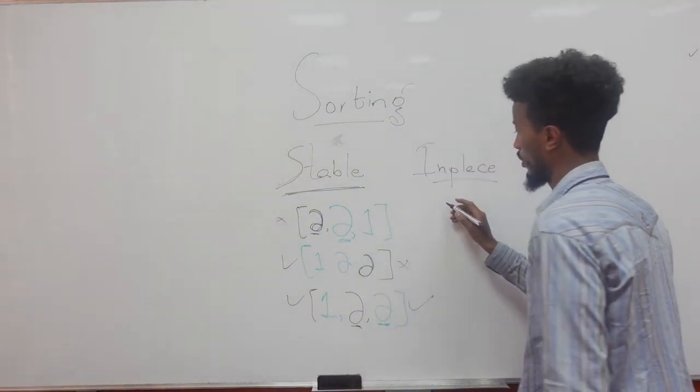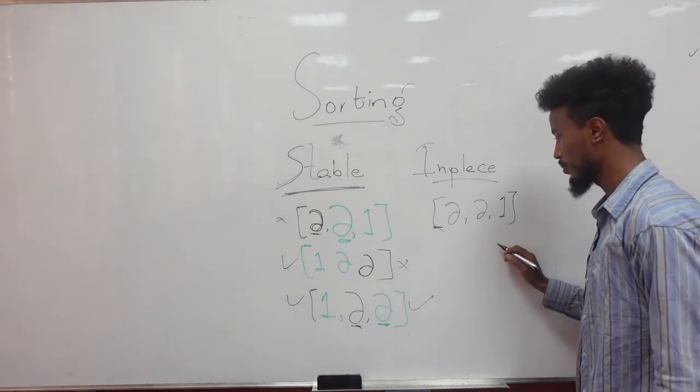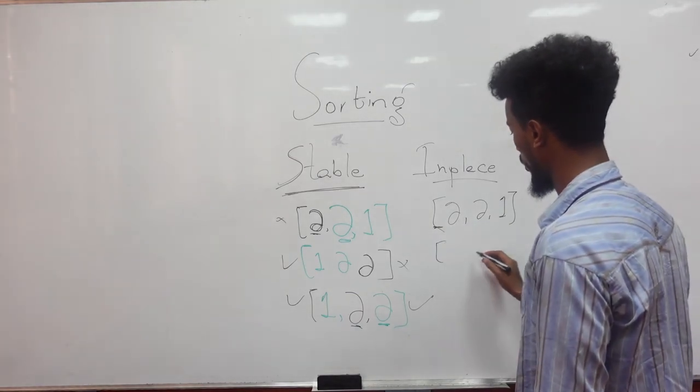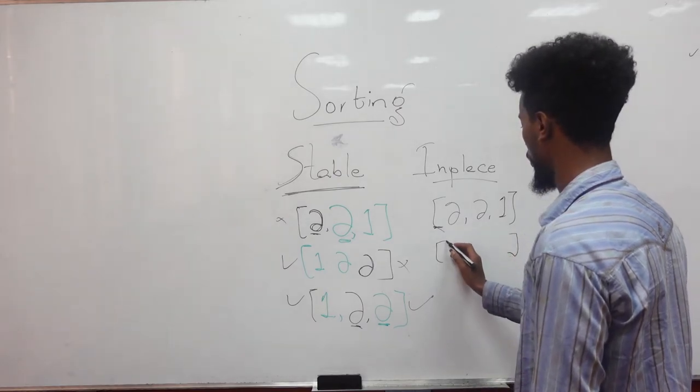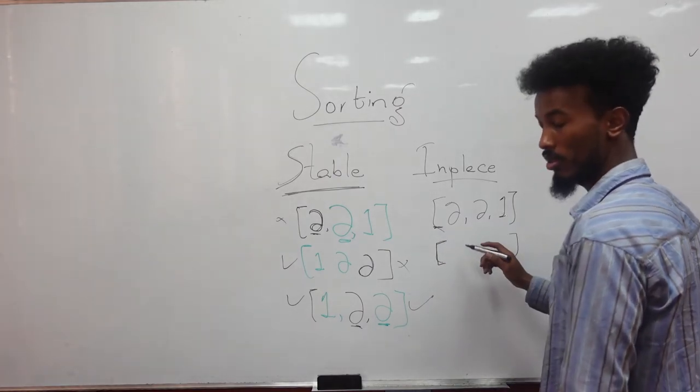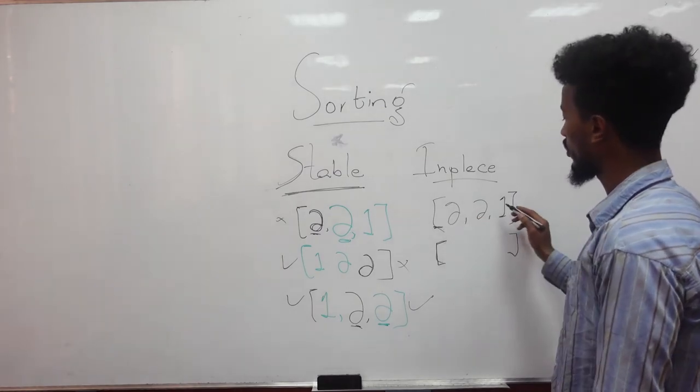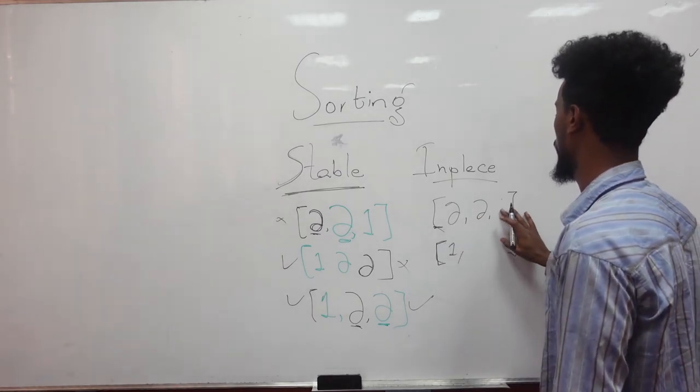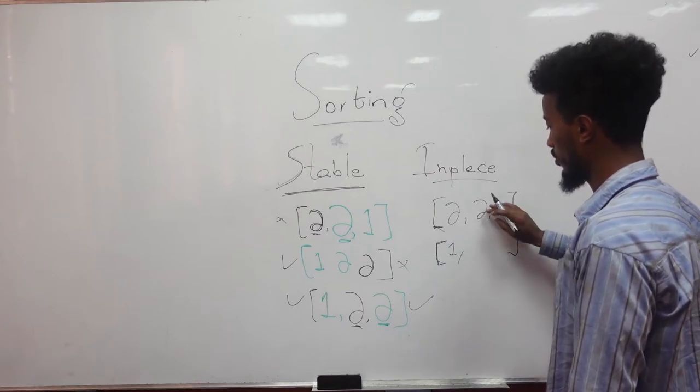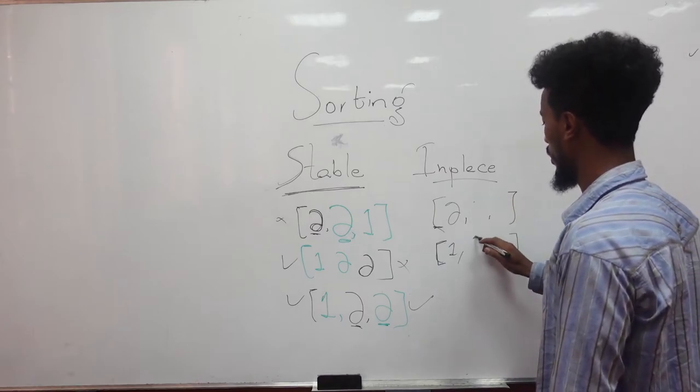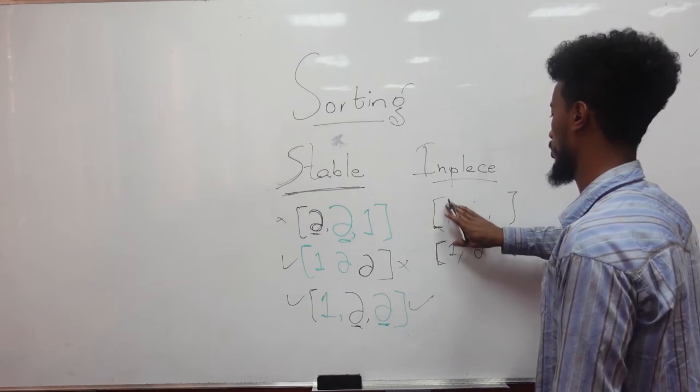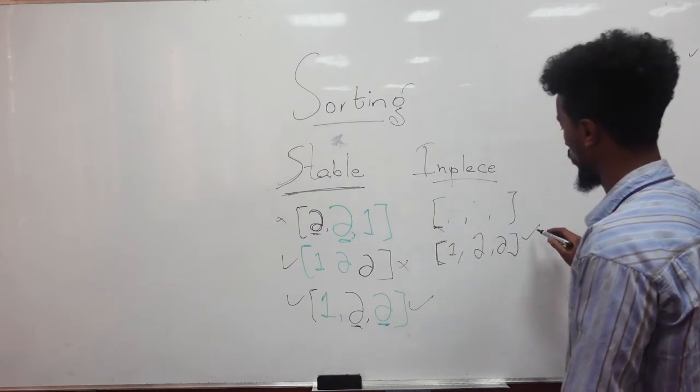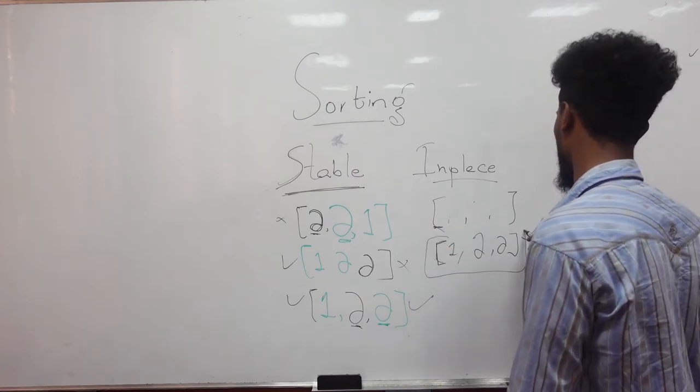What about in-place? We are given this input. Now, I have created the same array, which is the size of this. Then I find the minimum one, which is one. I removed it. Now this is sorted. And we returned this array.